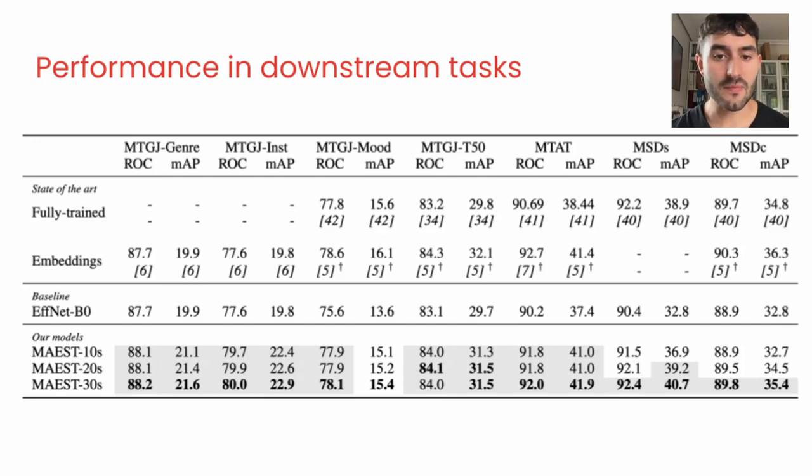We compare with CNN baselines trained on the same dataset, other state-of-the-art music representation models, and models fully trained in the downstream task. We find that our models are the best performing public solution and only surpassed in certain cases by closed models.